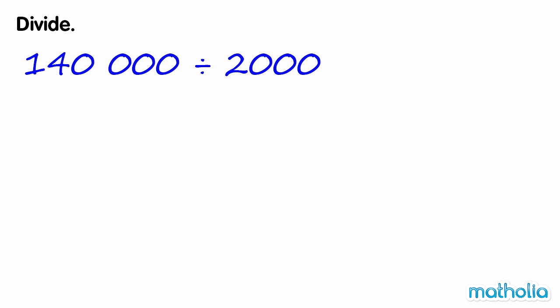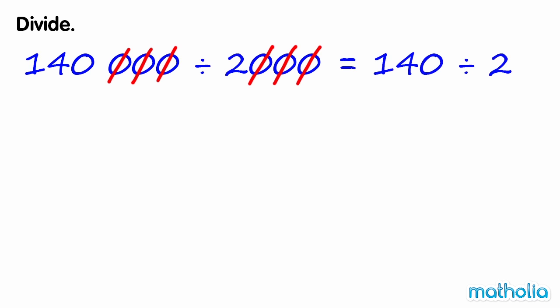Divide. Find 140,000 divide 2,000. Both 140,000 and 2,000 are multiples of 1,000. So the zeros in the hundreds, tens, and ones place cancel. 140,000 divide 2,000 is equal to 140 divide 2. 140 divide 2 equals 70.